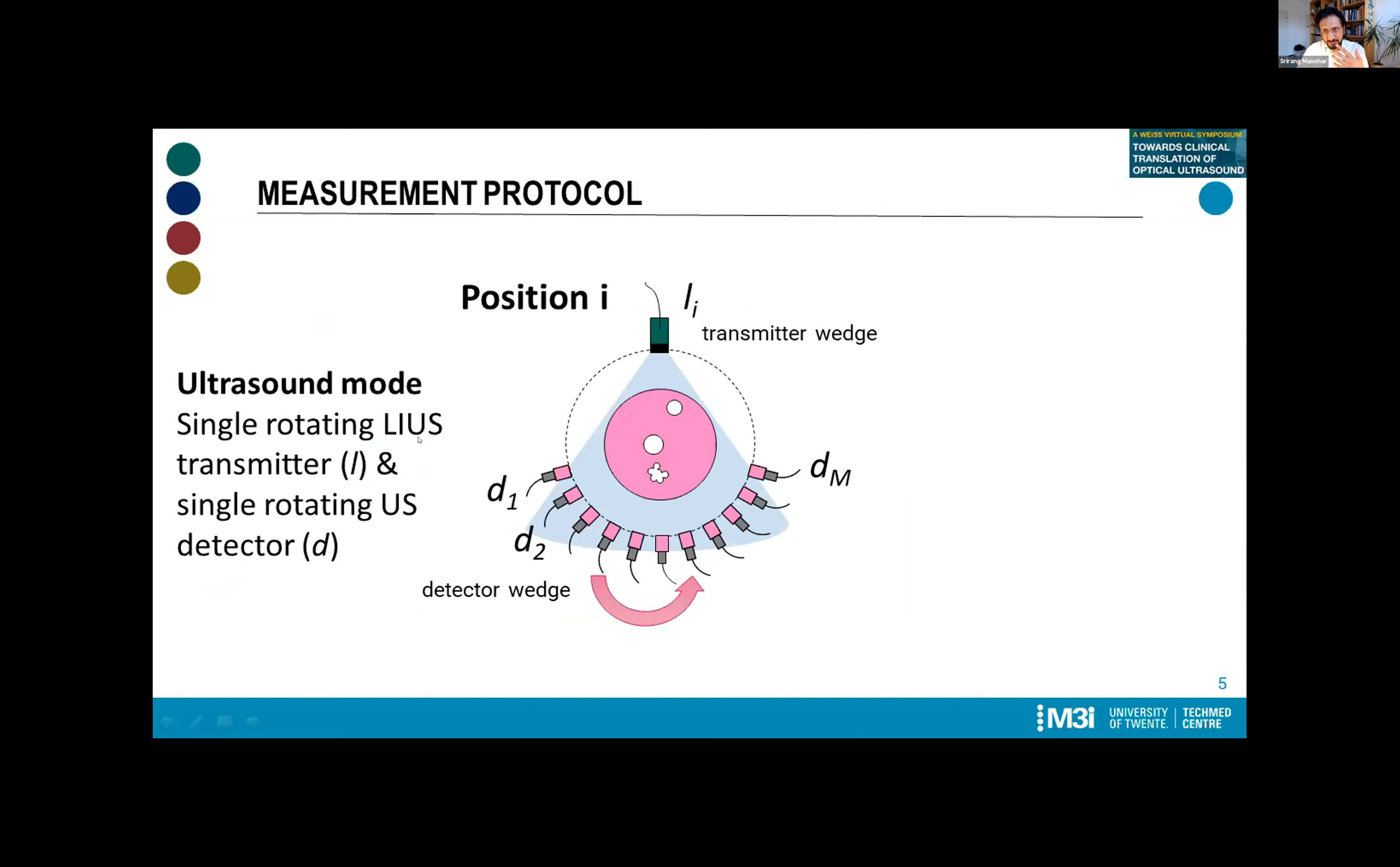In the ultrasound mode, you can also do photoacoustics, but in the ultrasound mode, we have the transmitter occupying a stationary position for the first set of acquisitions, and we move the detector wedge so that the detector is sampling the cone beam of the insonifying field. This is only in 2D, I should say, and then we go to a second position of the transmitter and replicate this acquisition.